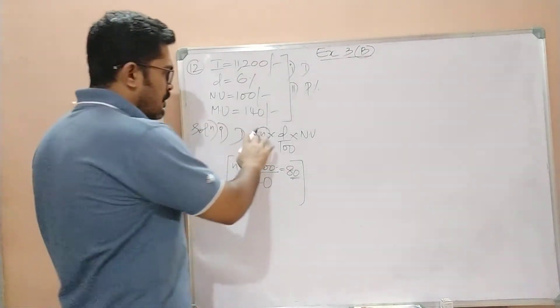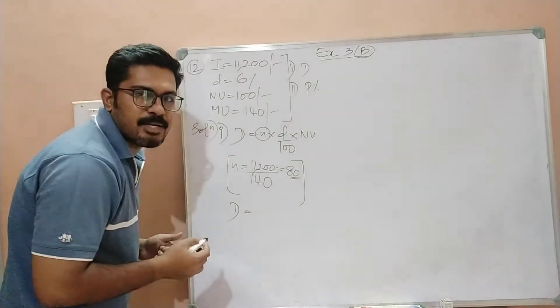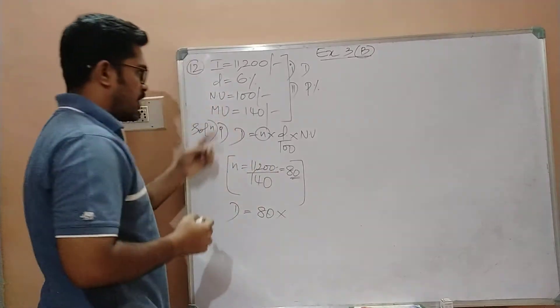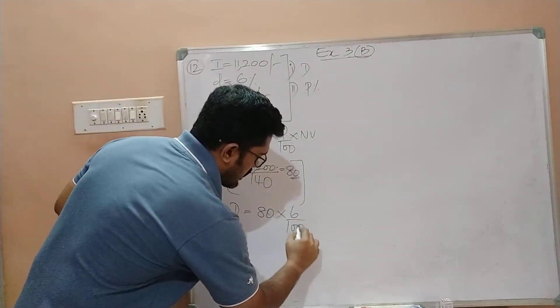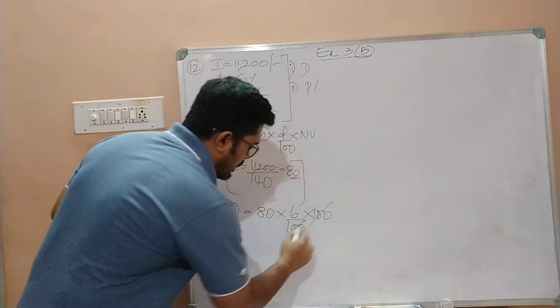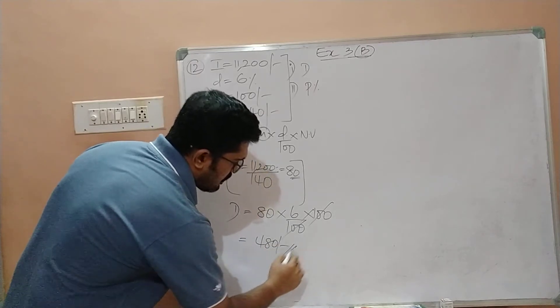Now we can substitute all the values into the formula to find the annual dividend. D is equal to N, which is 80, multiplied by D by 100, that is 6 by 100, into nominal value 100. 100, 100 cancel. 80 into 6 is 480 rupees.